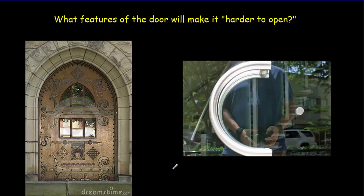The first obvious thing is changing the mass. It's like when we first studied Newton's first law — objects with a lot of mass have a lot of inertia. Well, objects with a lot of mass are also going to be hard to rotate; they're going to have a lot of rotational inertia. So the first thing you've got to do is consider mass.